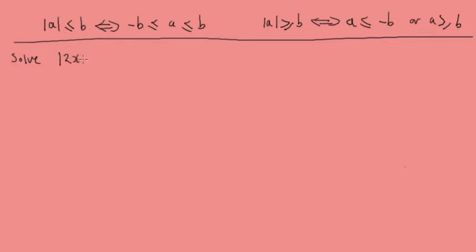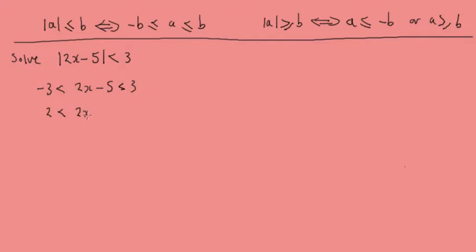So let's solve the modulus of 2x minus 5 is less than 3. In this case b would be 3, so minus 3 must be less than or equal to 2x minus 5, which is less than 3. Solving this, we add 5 to each side, giving us 2 is less than 2x is less than 8.